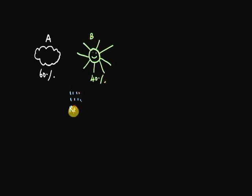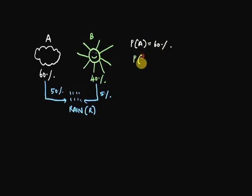The chances of evening rain are 50% if A happens, and 5% if B happens. And we'll just call this R. So listing all this down, the probability of A is 60%, B is 40%. The probability of rain given A happens is 50%, and the probability of rain given B is 5%.